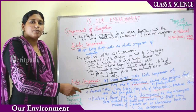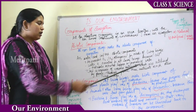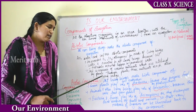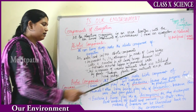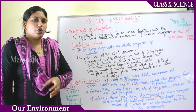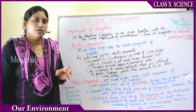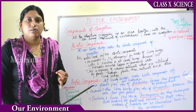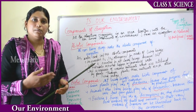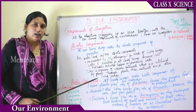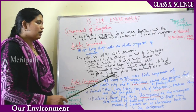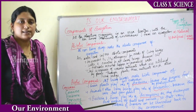Soil is a reservoir of many nutrients like nitrogen, phosphorus, and potassium, which are utilized by plants for fertility and increased crop quantity. Through plants, these nutrients reach other living beings. Plants absorb nitrogen, phosphorus, and potassium from the soil, which then go into the fruits of the plant. When humans and animals consume these fruits, those nutrients enter their bodies.